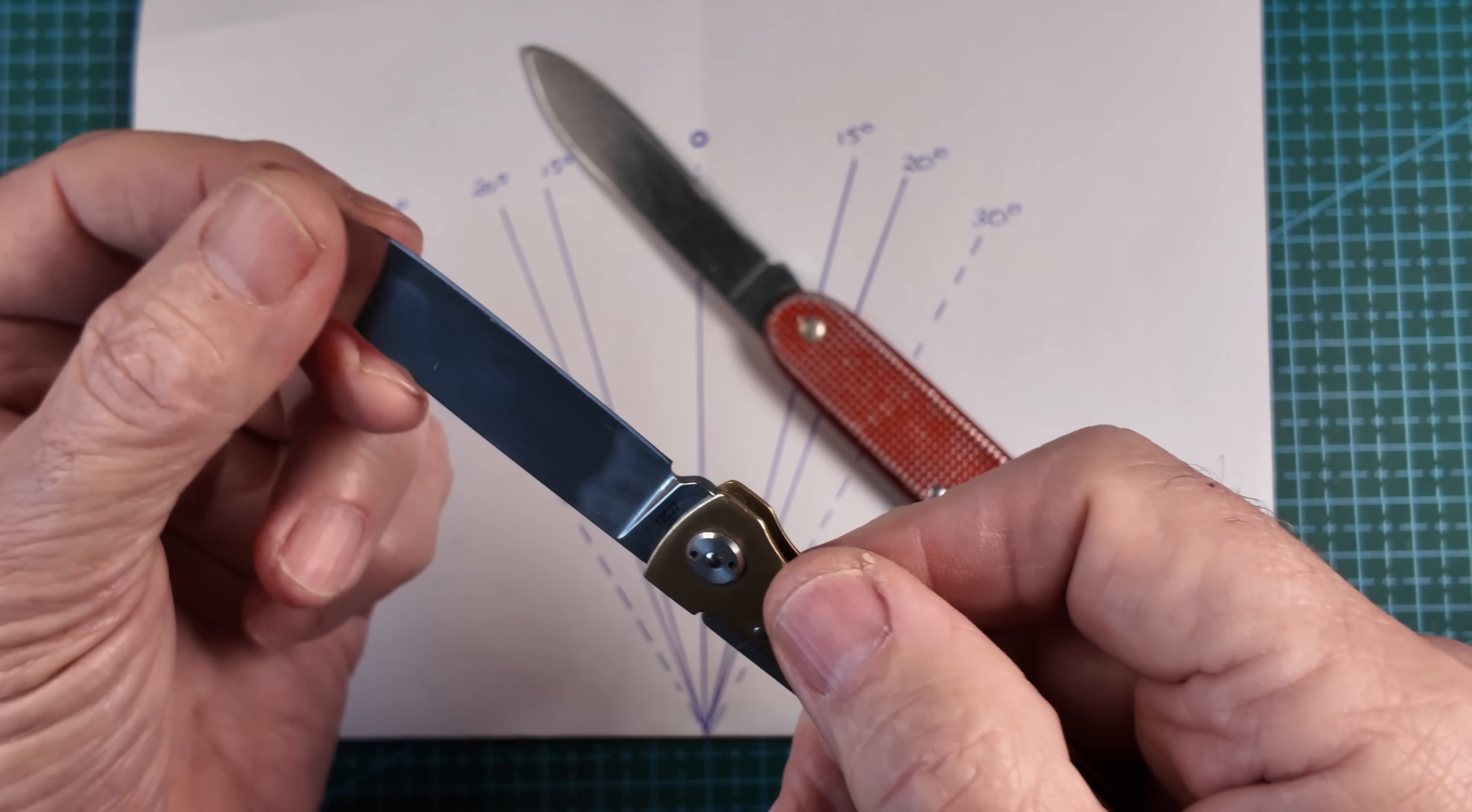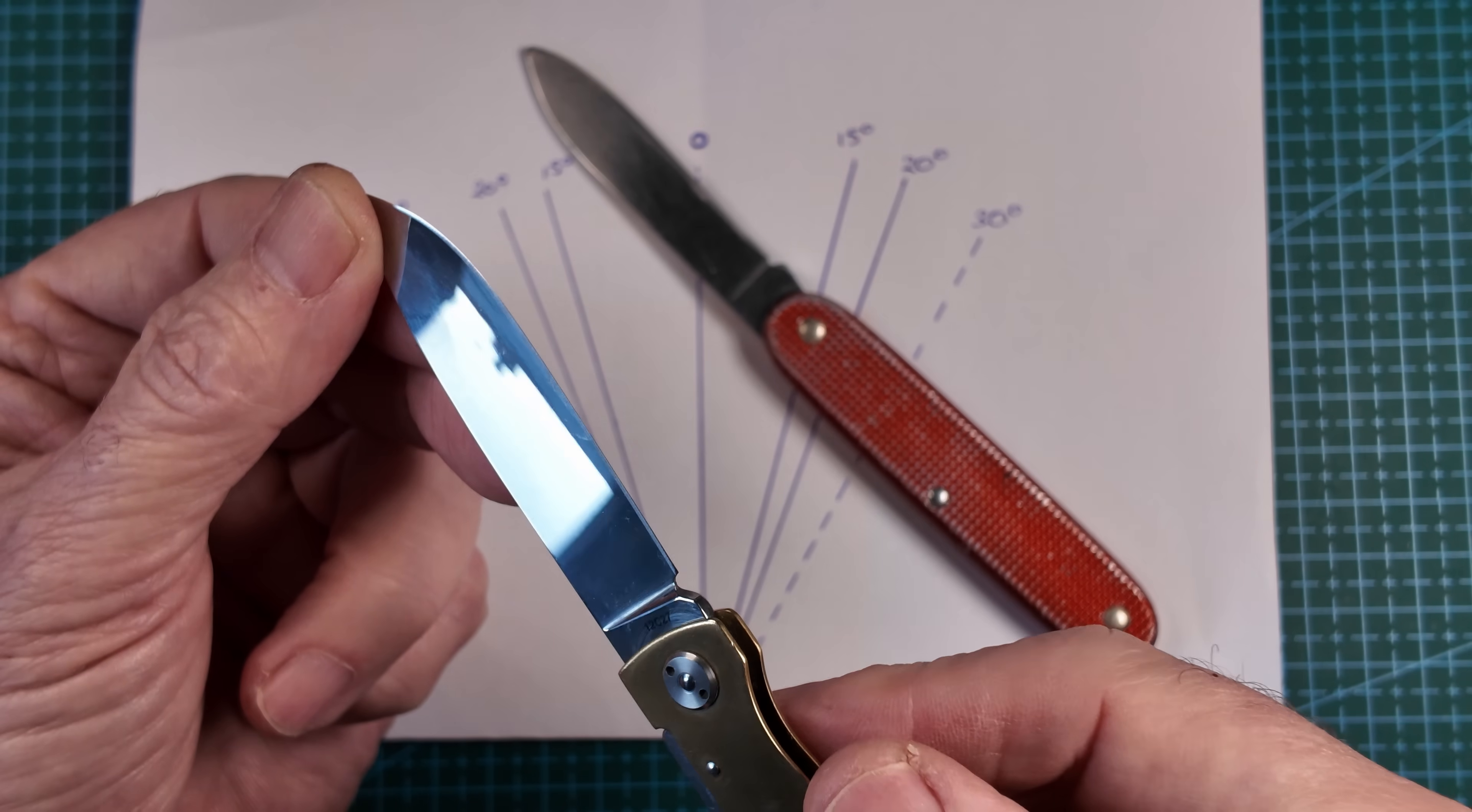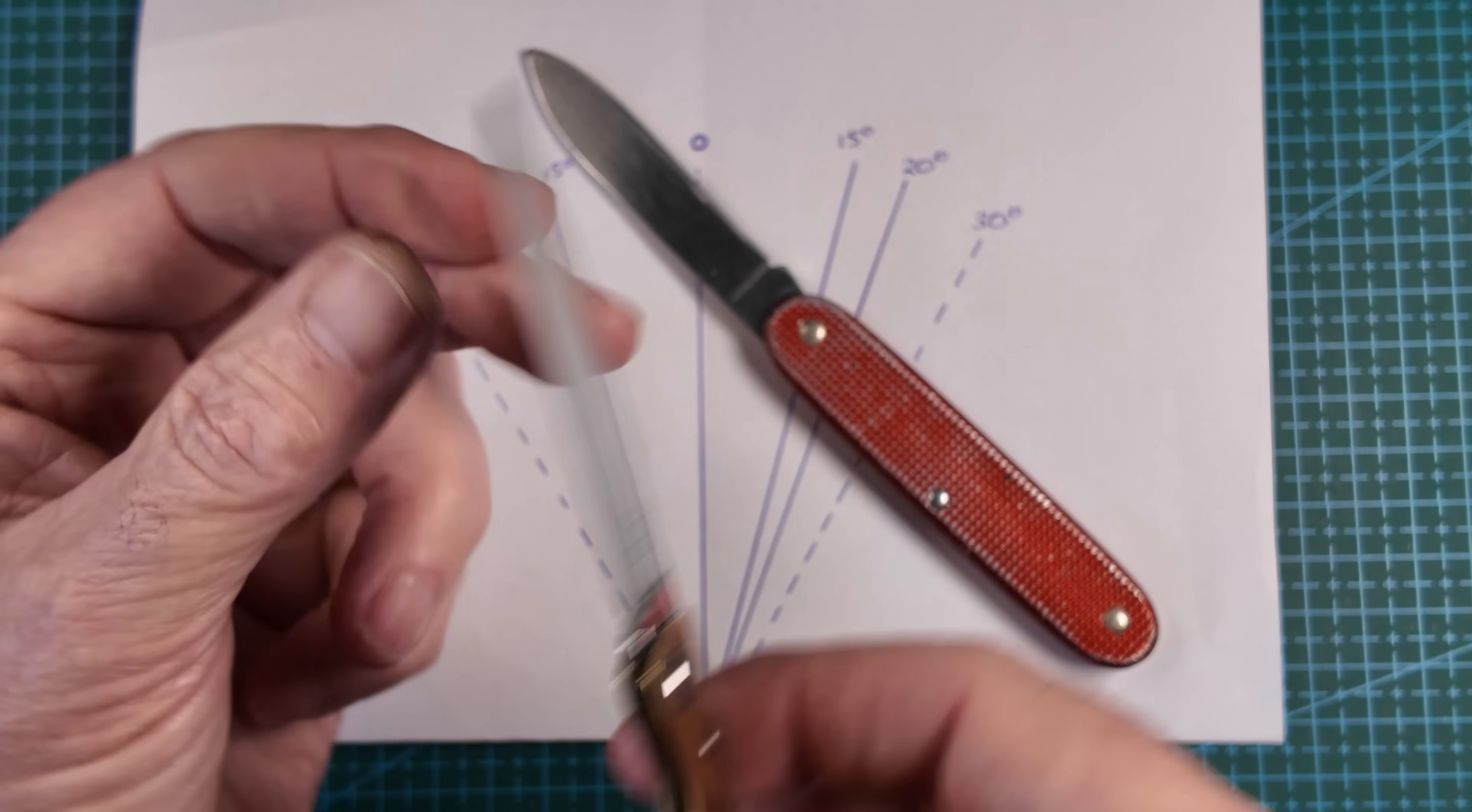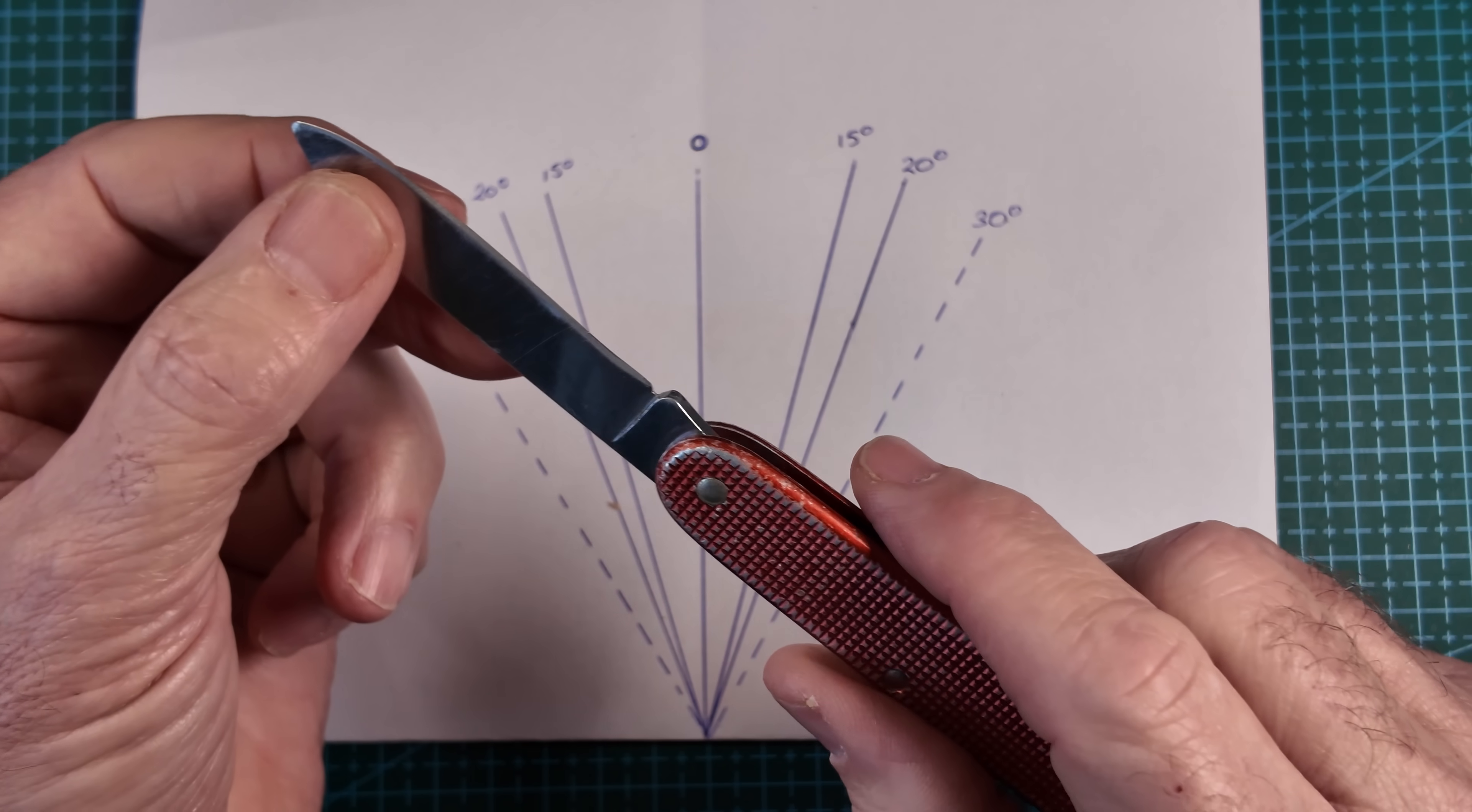If you want something even more slicey than maybe this Boker Atlas, then this has a concave grind. It's super slicey. And you can see it's got a secondary bevel just to make it a little bit stronger. So you might want to consider the grind of the blade as well as the actual edge.